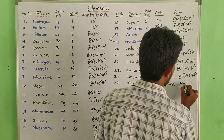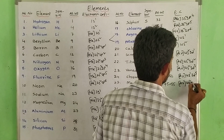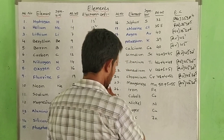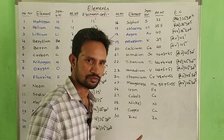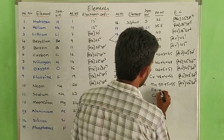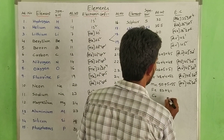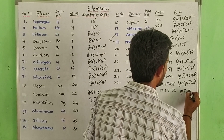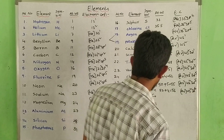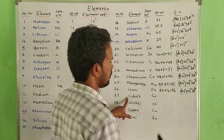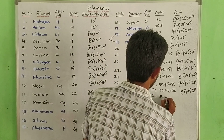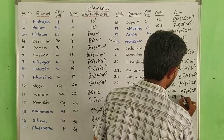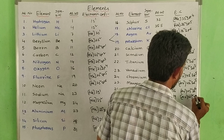Next: manganese, element 25, atomic weight 55 — [Ar] 4s2 3d5. Next: iron, element 26, atomic weight 56 — [Ar] 4s2 3d6. Next: cobalt, element 27, atomic weight 59 — [Ar] 4s2 3d7.